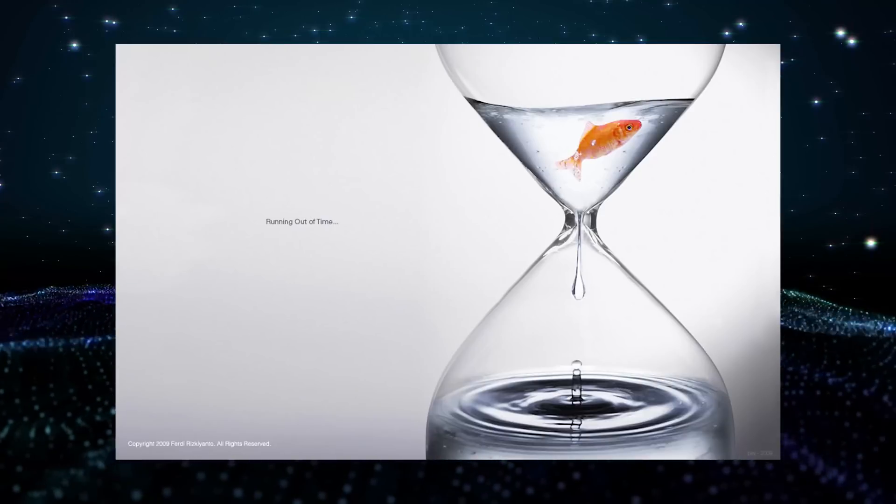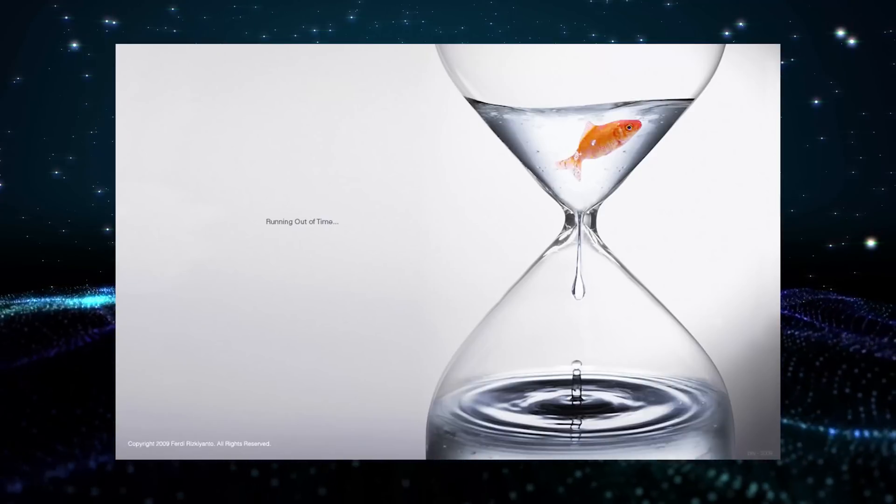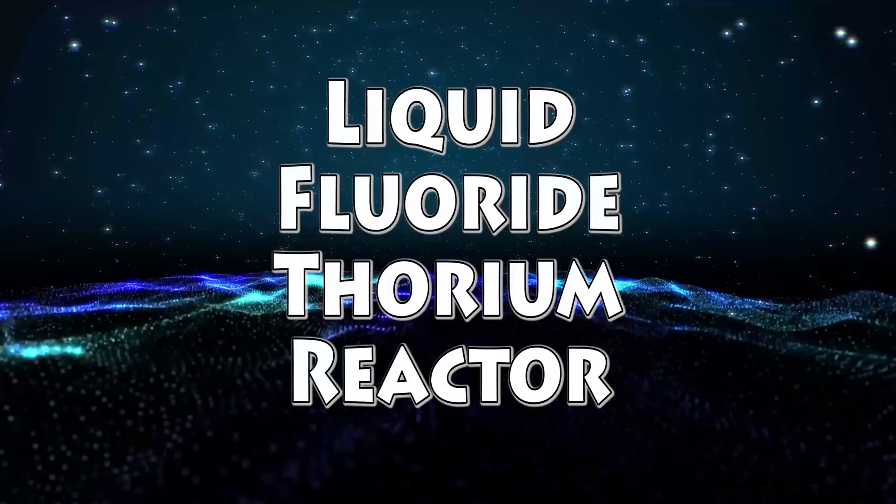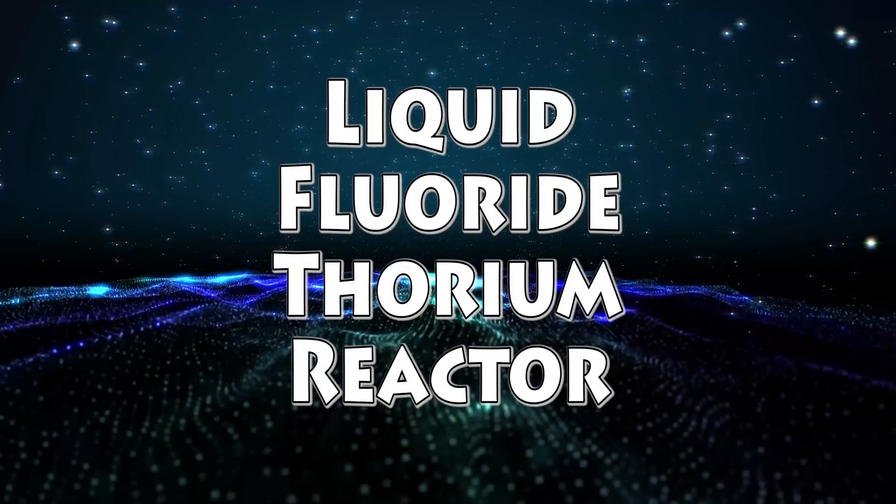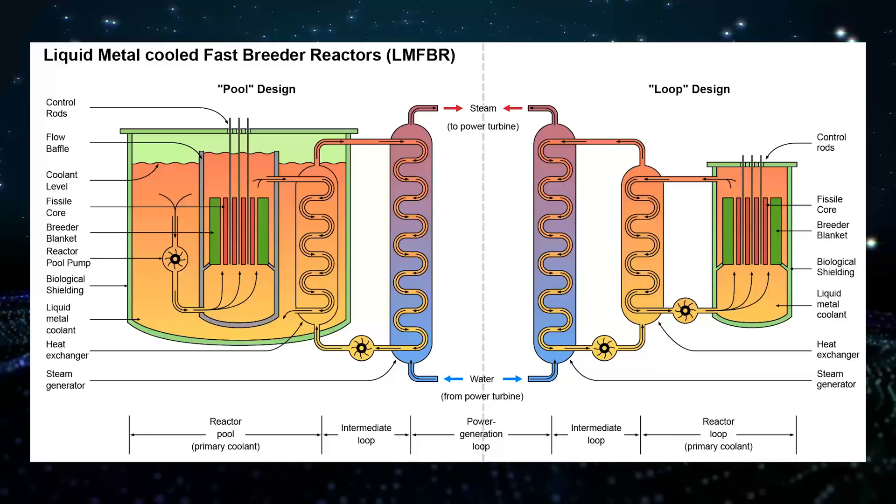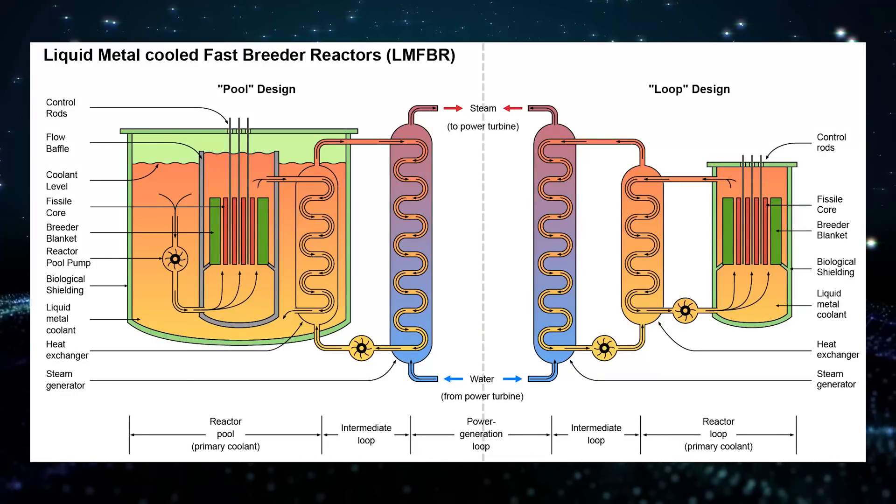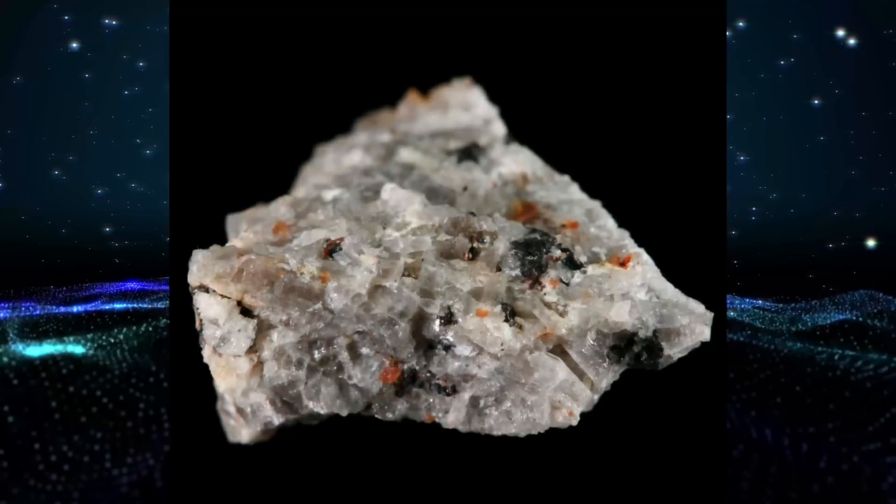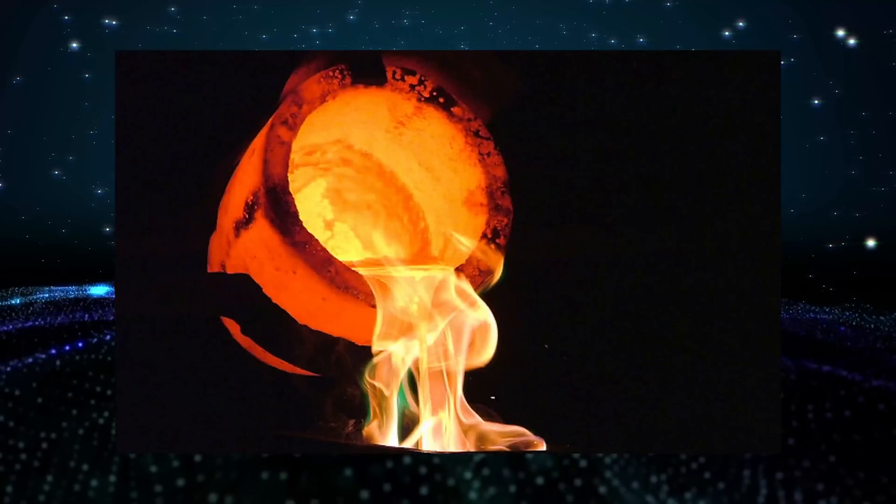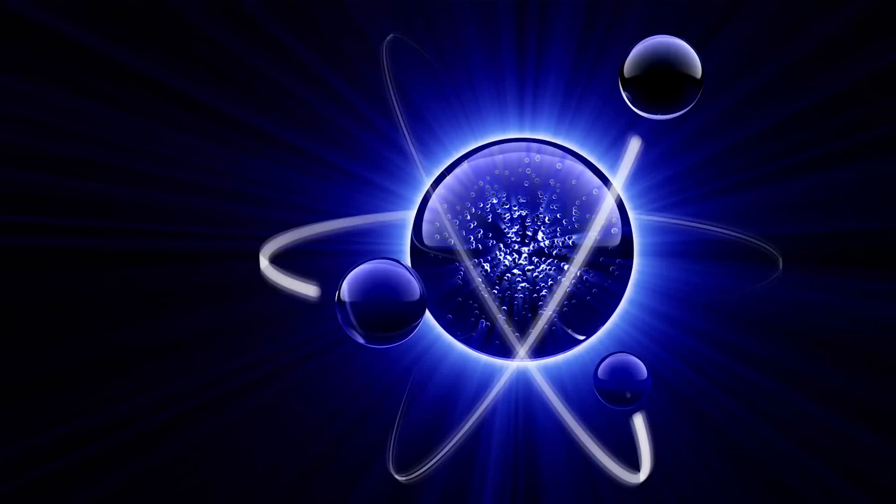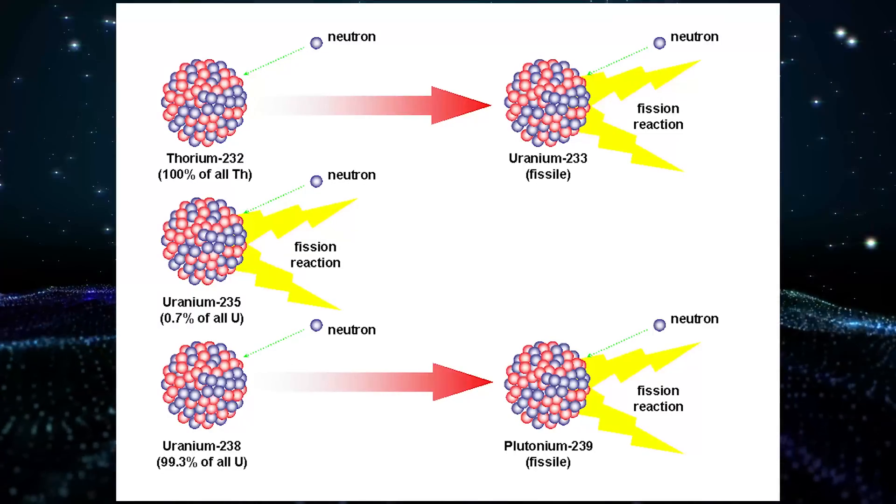All these problems could be solved by a fancy new type of reactor, a liquid fluoride thorium reactor, or LFTR. LFTRs are a type of breeder reactor, meaning that they are much more efficient than today's reactors. First, thorium would be dissolved into molten salt and blasted by neutrons. This would cause the thorium to decay into uranium, a fissile material.